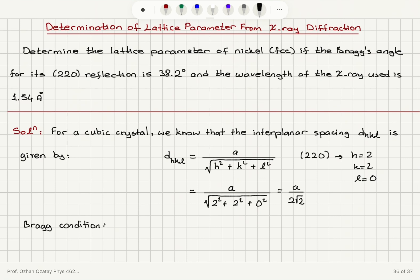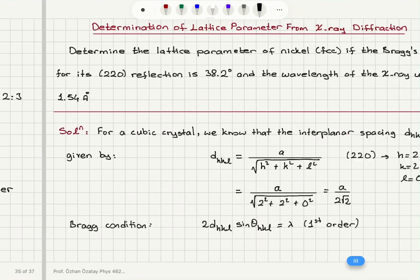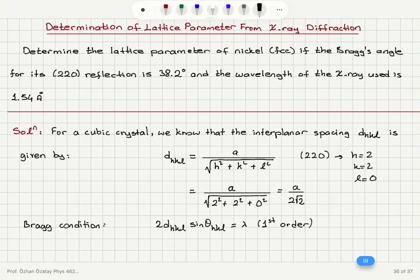Bragg's law tells me constructive interference will occur when the path difference 2DHKL sine theta for reflections from the HKL planes equals lambda. This is the first order Bragg reflection. In the previous problem, we have shown the path difference has to be 2D sine theta.